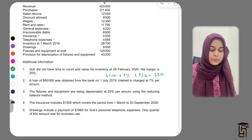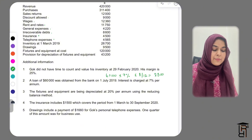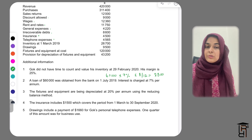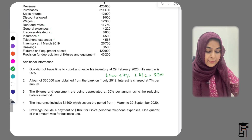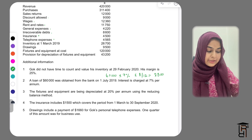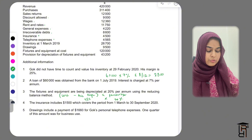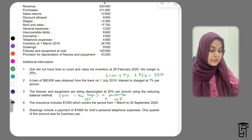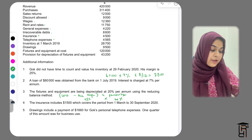The third piece of additional information says fixtures and equipment are being depreciated at 20% per annum using the reducing balance method. The reducing balance formula is: cost minus accumulated depreciation, multiplied by the percentage. Here the percentage is 20%, accumulated depreciation is £43,200, and cost is £120,000. So our depreciation is (£120,000 − £43,200) × 20% = £15,360.